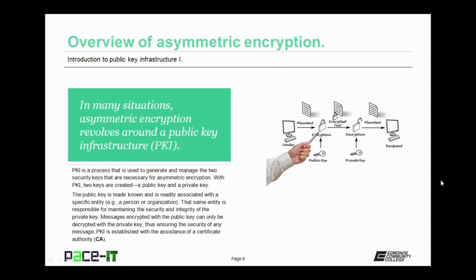In many situations, asymmetrical encryption revolves around a public key infrastructure, or PKI. PKI is a process that is used to generate and manage the two security keys that are necessary for asymmetrical encryption. With PKI, two keys are created: a public key and a private key. The public key is made known and is readily associated with a specific entity, as in the public key is known to belong to either a person or an organization. That same entity is responsible for maintaining the security and integrity of the private key. Messages encrypted with the public key can only be decrypted with the private key, thus ensuring the security of any message.